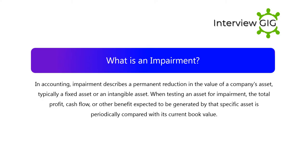What is impairment in accounting? Impairment describes a permanent reduction in the value of a company's asset, typically a fixed asset or an intangible asset. When testing an asset for impairment, the total profit, cash flow, or other benefit expected to be generated by that specific asset is periodically compared with its current book value.